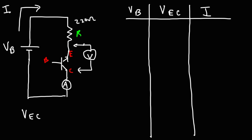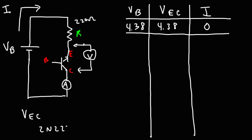There's only one path for the current to flow in this circuit. Using three AA batteries, I measured a voltage of 4.38 volts — VEC was 4.38 and the current was zero because the breakdown voltage of the emitter-collector region had not been reached. Note that during this experiment I used a different 2N2222A transistor, so the breakdown voltage won't be 7.32. Using four AA batteries, the voltage measured was 5.85 volts. With no current flowing, VB equals VEC.